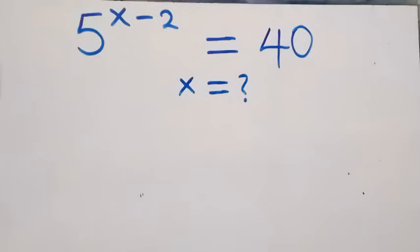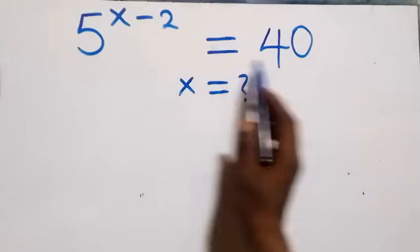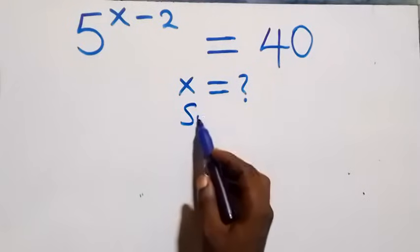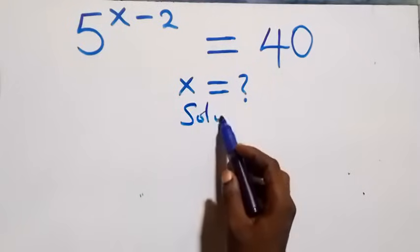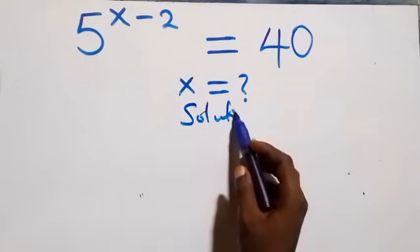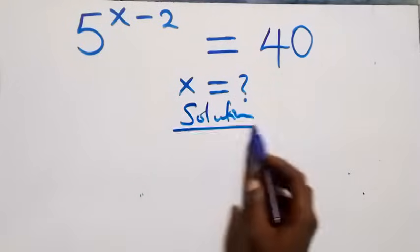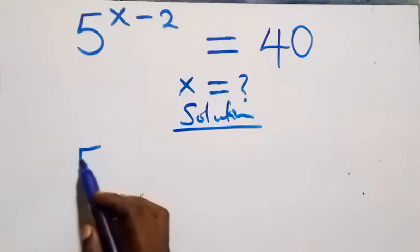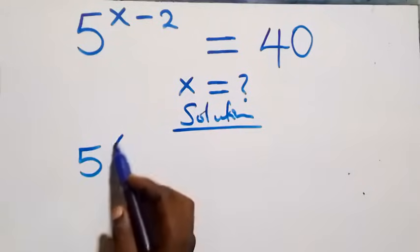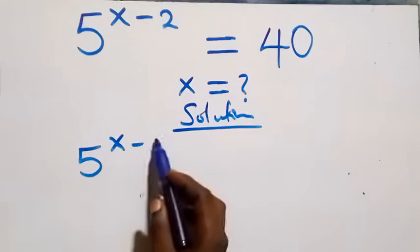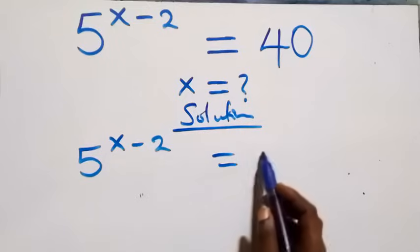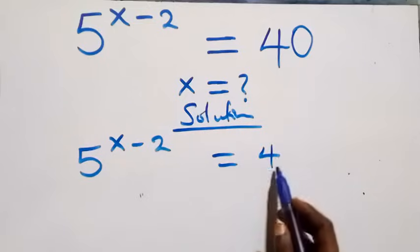Hello, you are welcome. How to solve this nice exponential equation. The equation we have here is 5 raised to power x minus 2, equals 40.